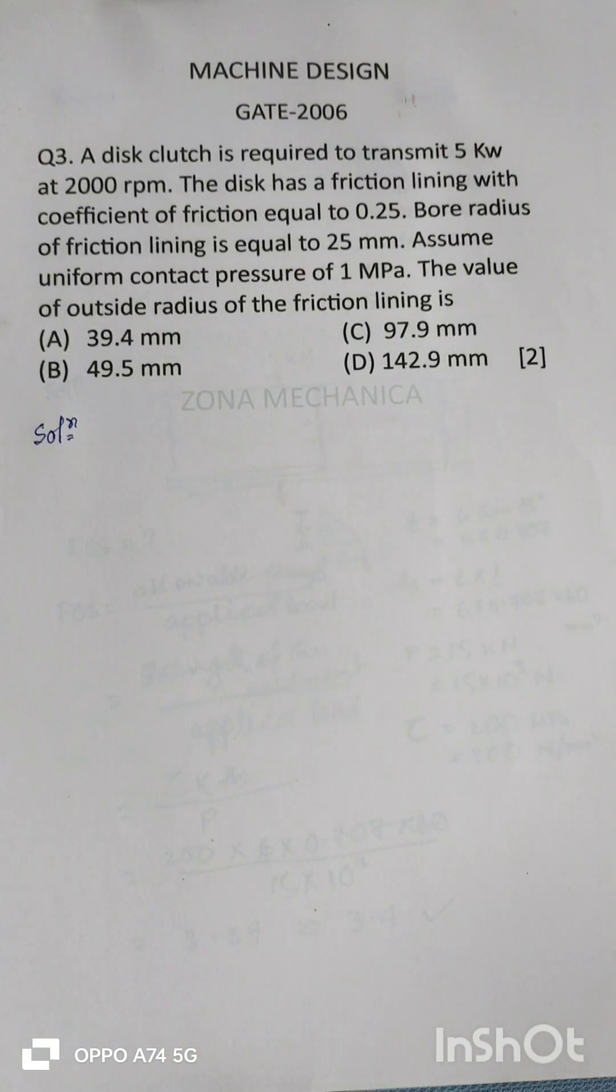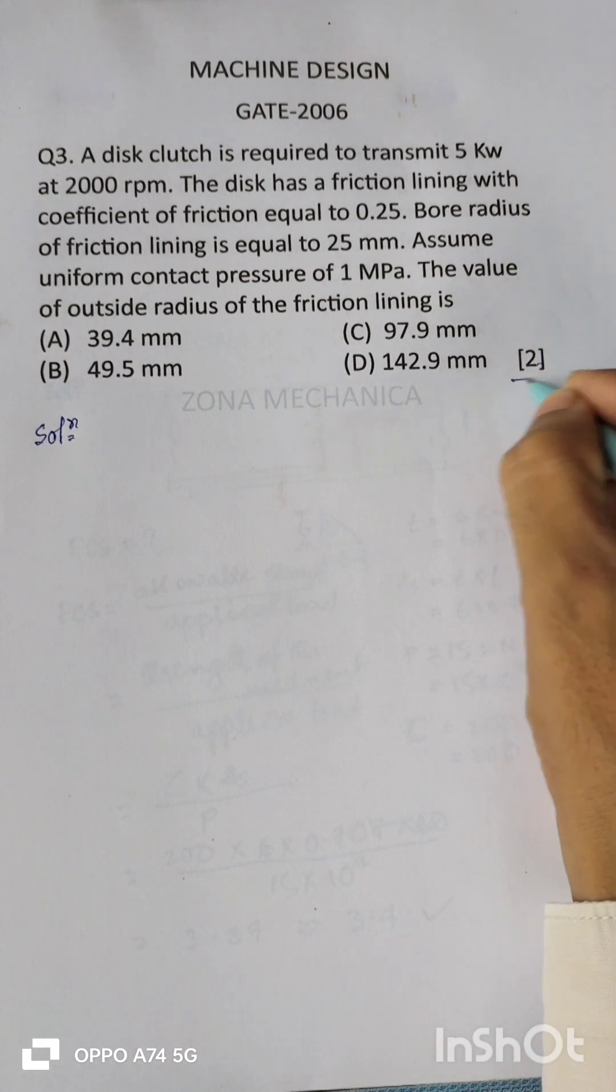Hi, welcome to Zona Mechanica. There is an MCQ on disc clutch or plate clutch. The figure at the margin indicates the weightage of the question, that is 2 marks.